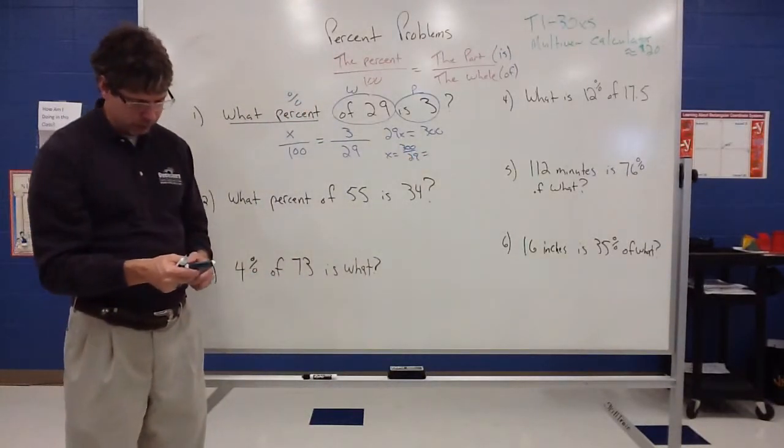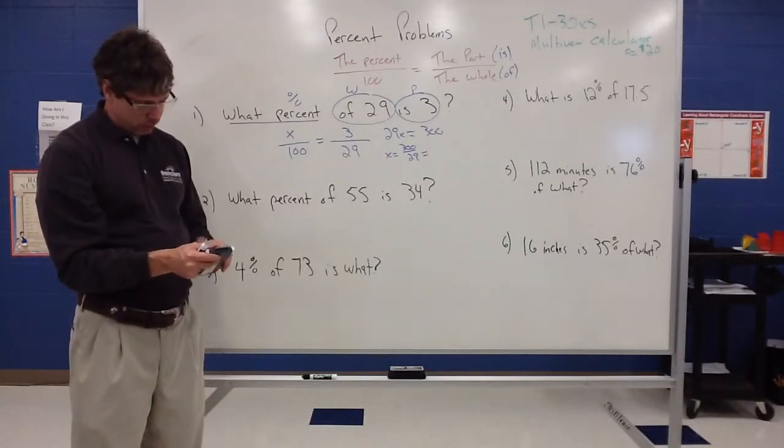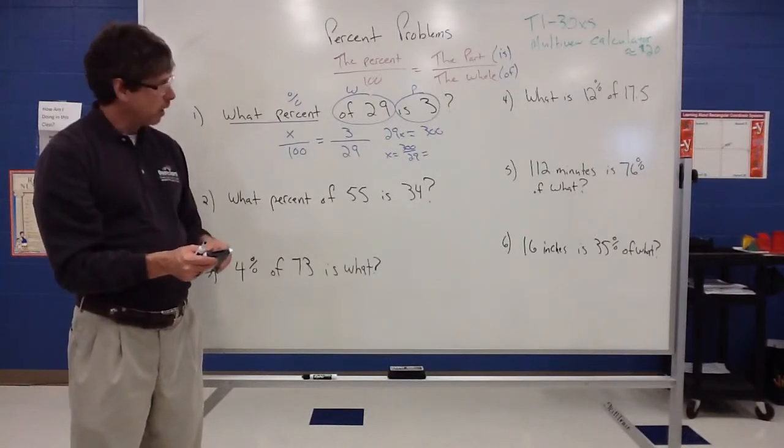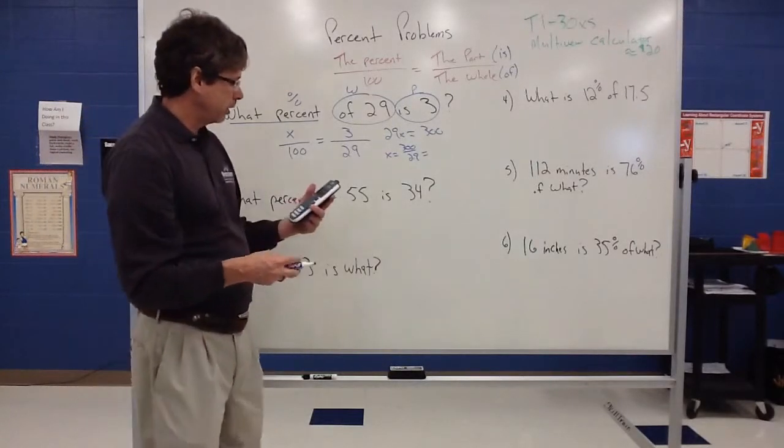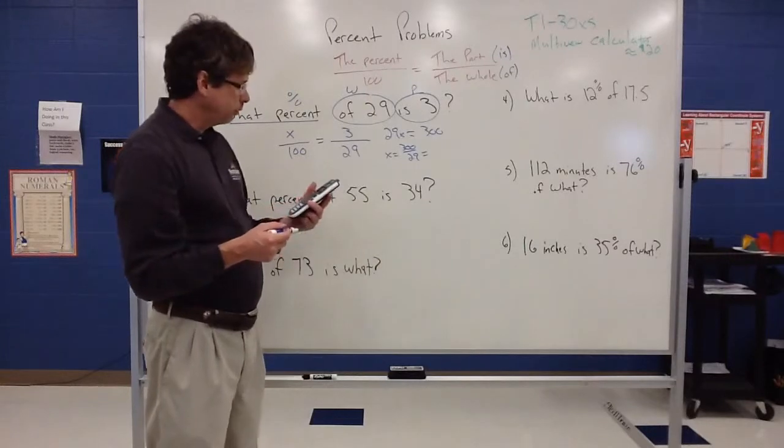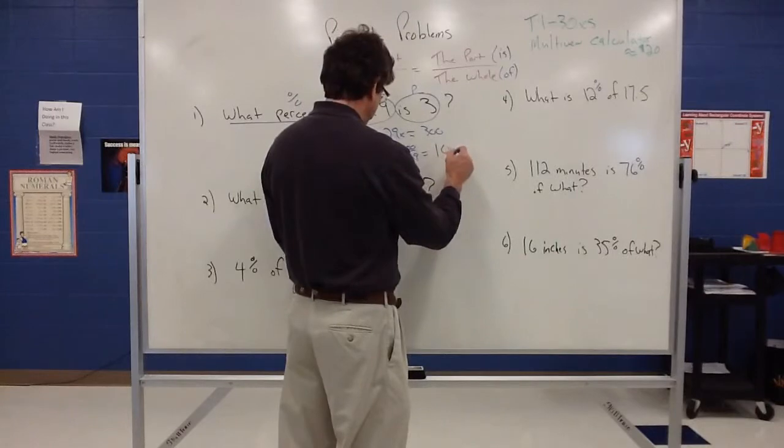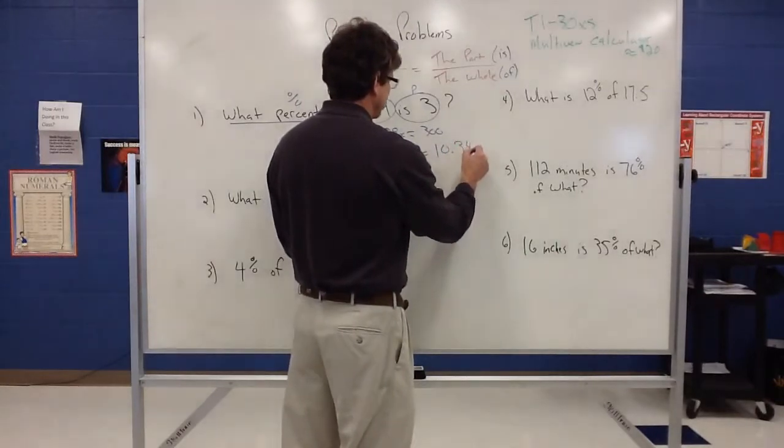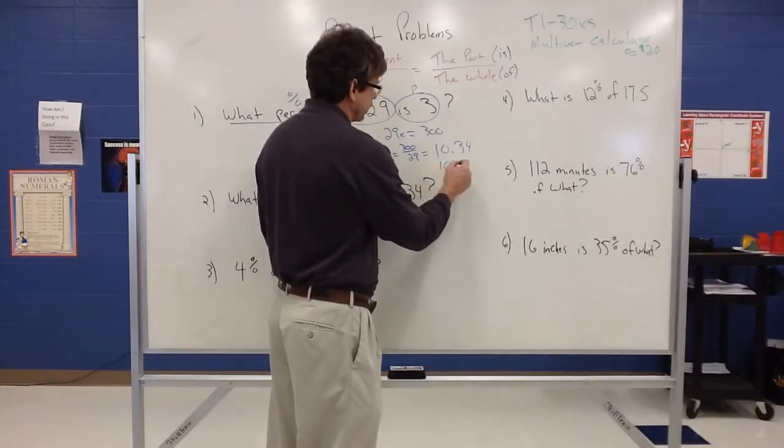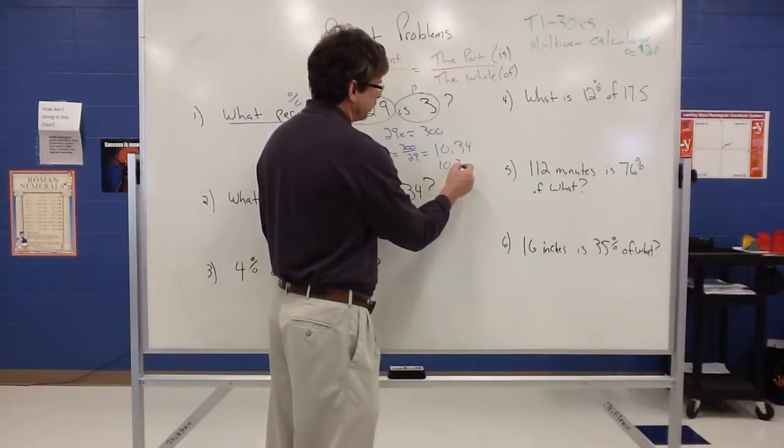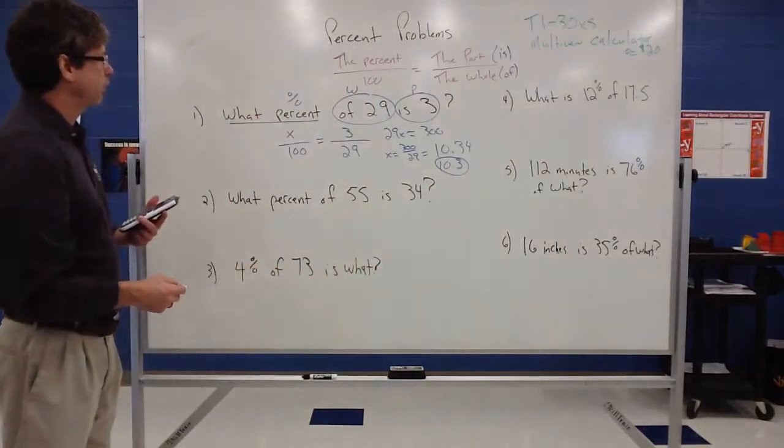So let's see where this takes us on a calculator. So I have 300 divided by 29, hit enter. So this gives me a funky little answer, and let's just round this to what we call the tenths place. So I have 10.34 and this keeps on going. But if I want to round to the tenths place, that 4 tells me to round this back to a 3 instead of rounding it back up to a 4. So we'll round that to 10.3 as our answer.